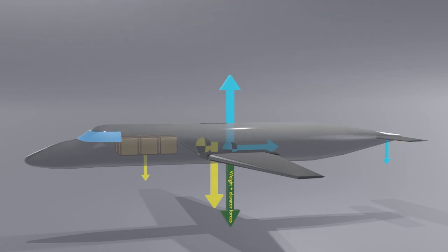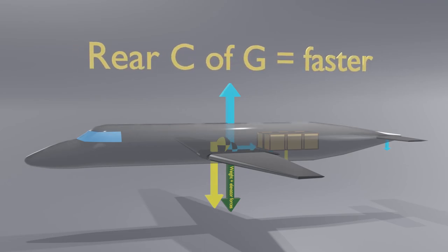Can you explain why a rearward C of G would lead to a faster cruise speed? The elevator doesn't need to push as hard, so the total downward force is less, and the wings don't need to generate as much lift to fly level. Less lift means less drag, and you can fly faster with the same amount of thrust.